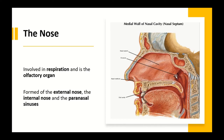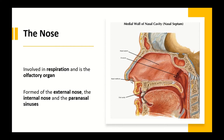The nasal cavity communicates posteriorly with the nasopharynx through the internal nares — the opening known as the choana. Within the nasal cavity, the superior part is the olfactory area containing olfactory receptors, while the remainder is the respiratory area. The nasal cavity is a box-like structure with a floor, roof, medial wall, and lateral wall, plus the external and internal nares as two openings.